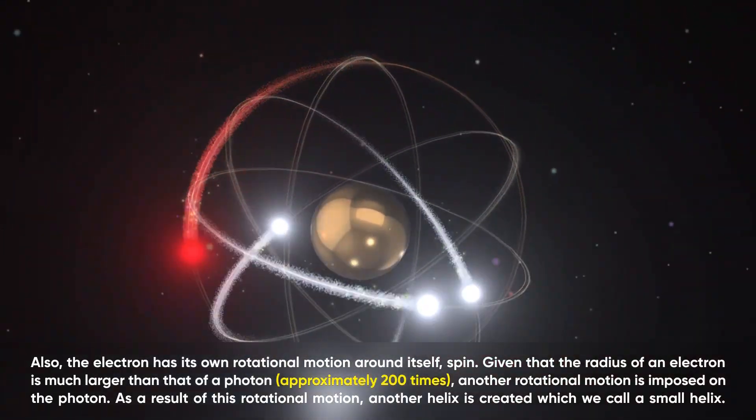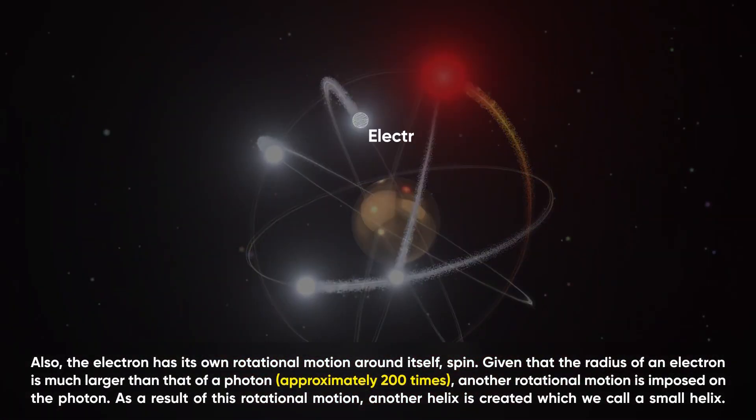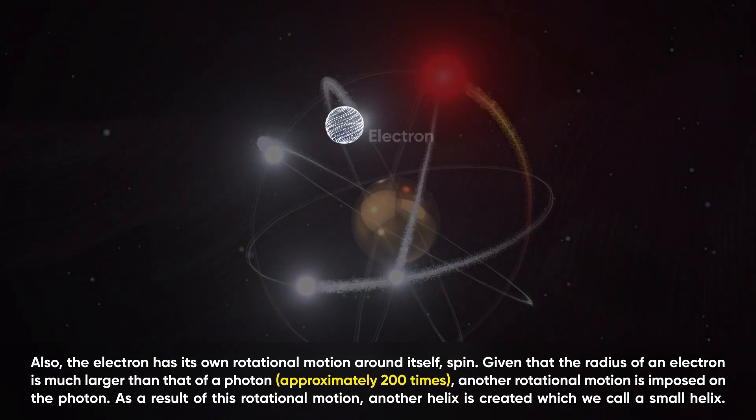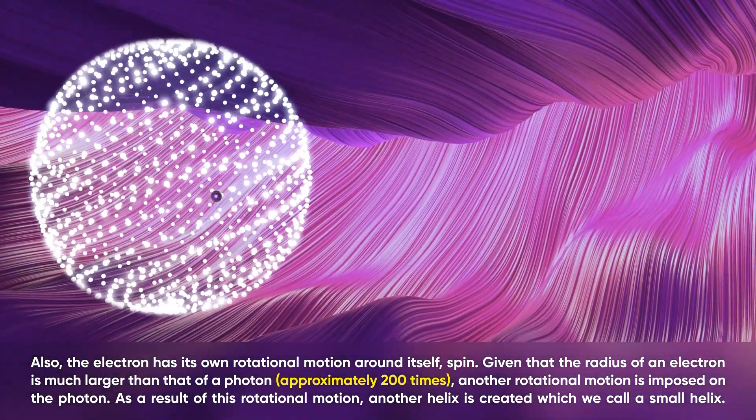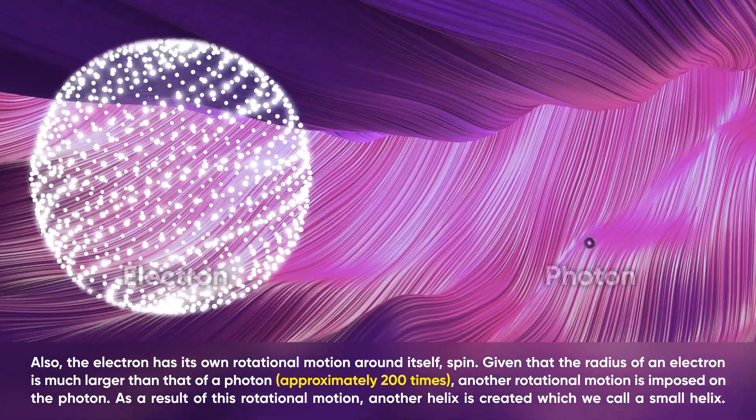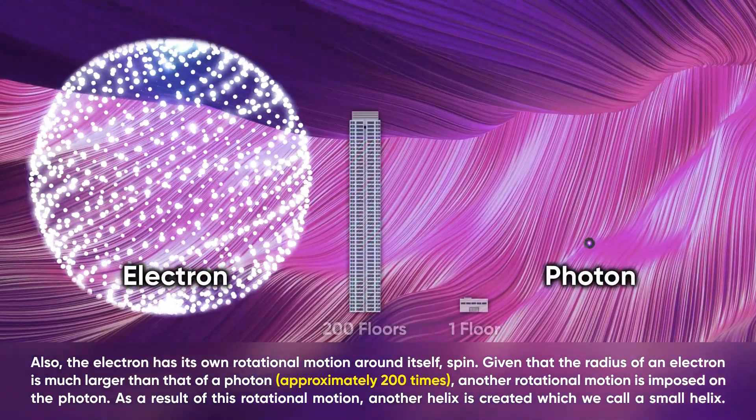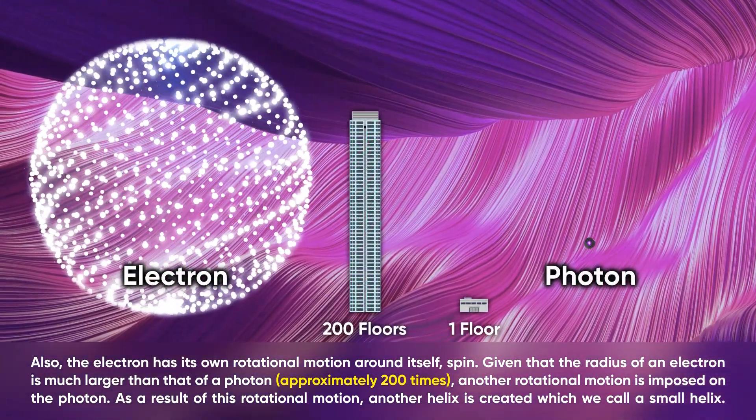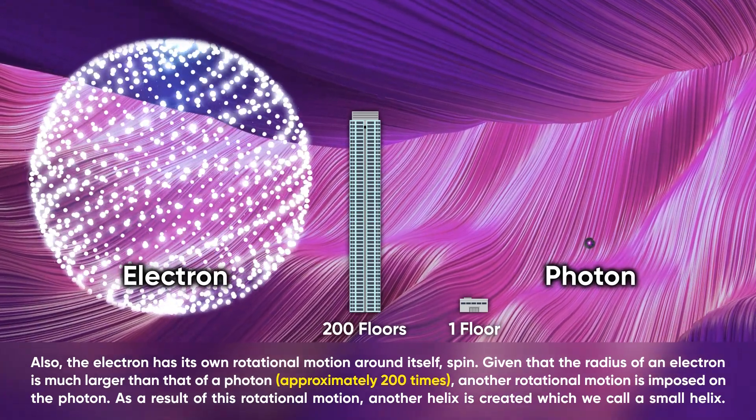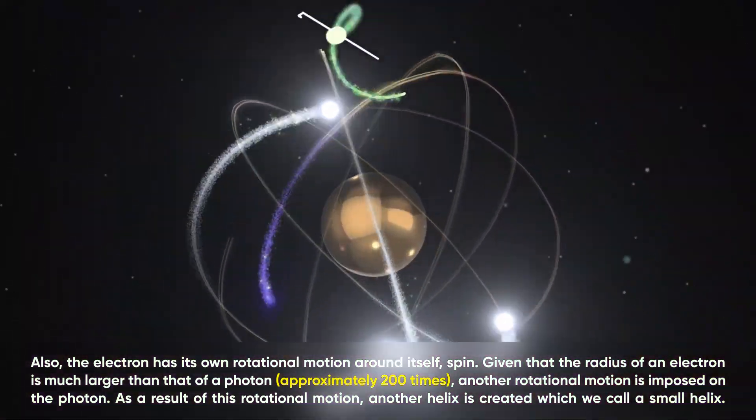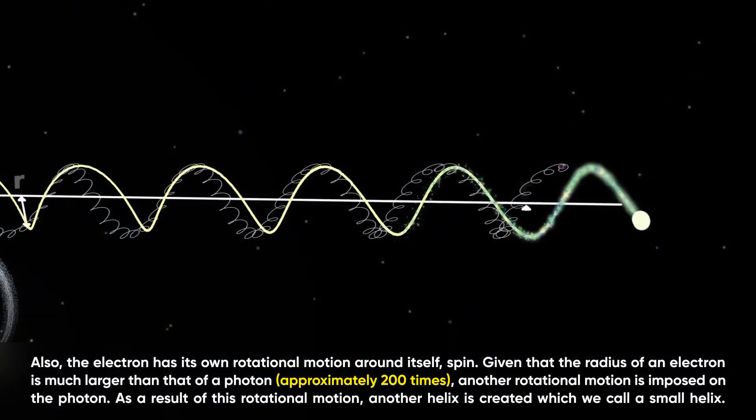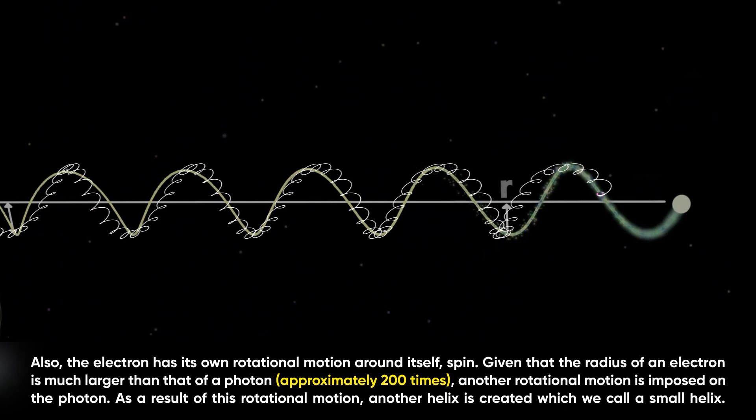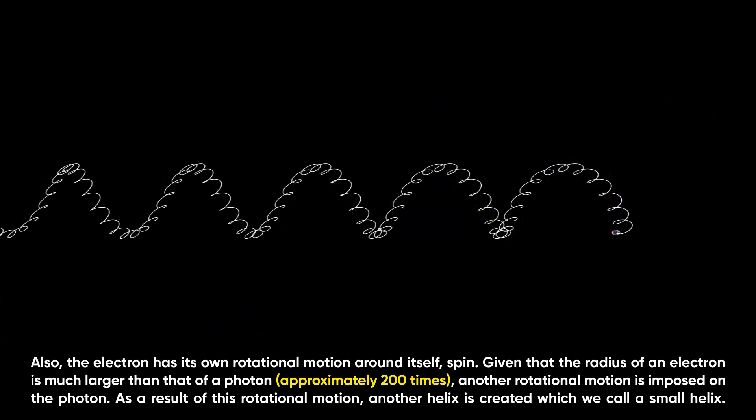Also, the electron has its own rotational motion around itself. Given that the radius of an electron is much larger than that of a photon (approximately 200 times), another rotational motion is imposed on the photon. As a result of this rotational motion, another helix is created which we call a small helix.